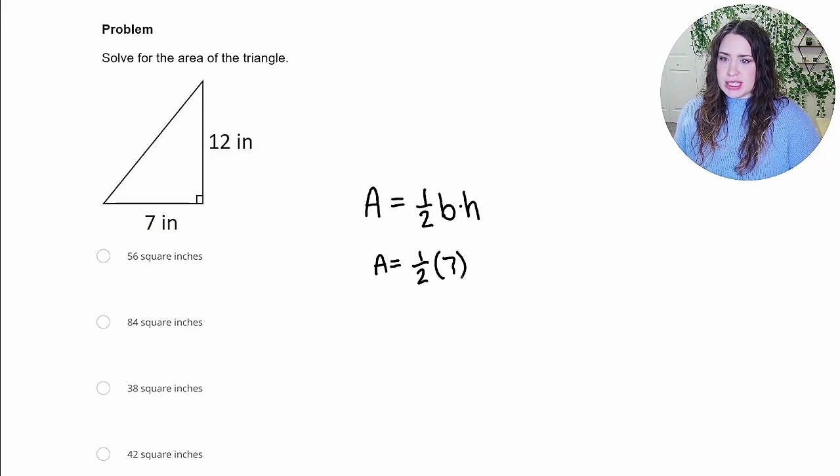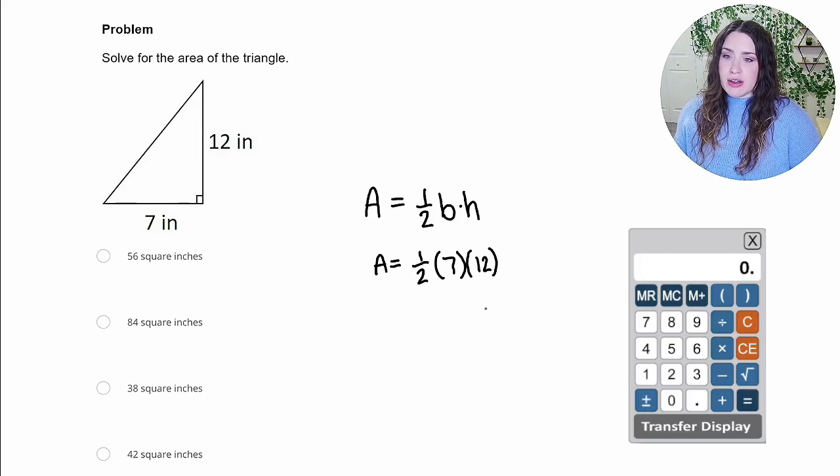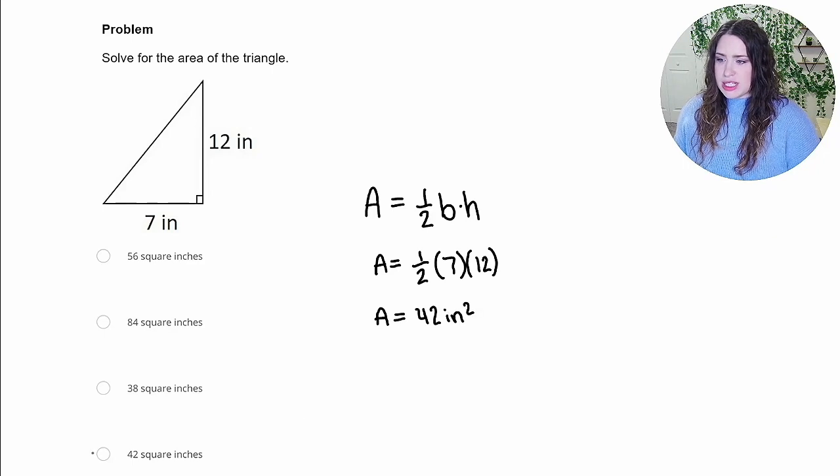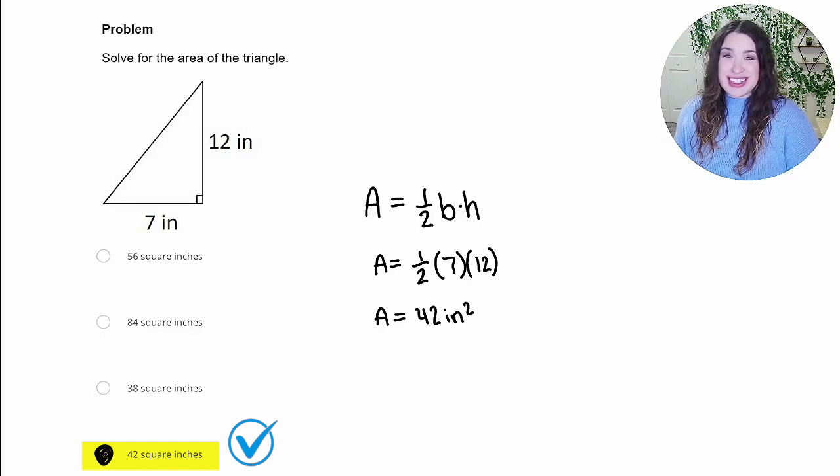So 1 half times 7 times 12. Now, I would recommend using your calculator or we can do 1 half times 12 first and do 6 times 7, which should give us an area of 42 square inches, which we see is the correct answer down here.